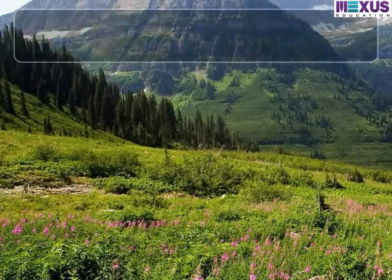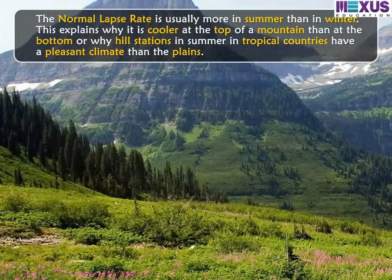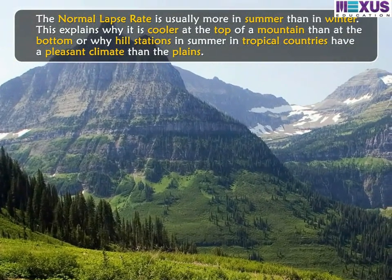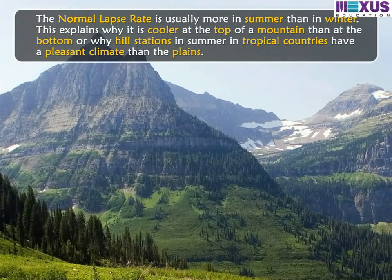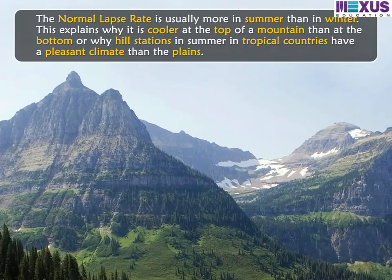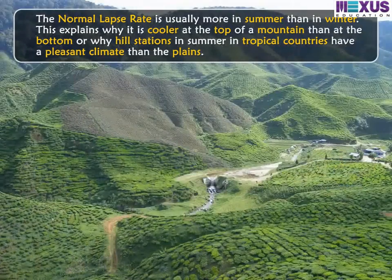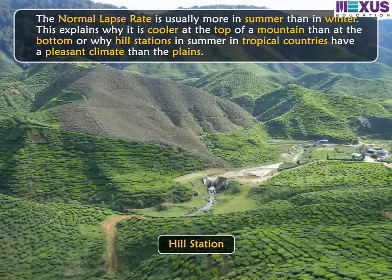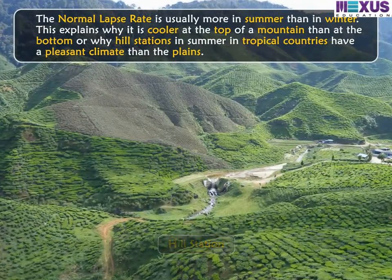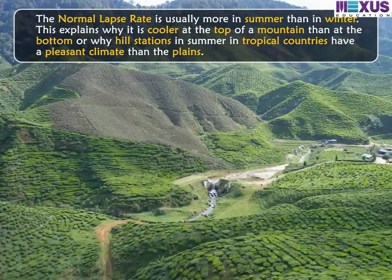The normal lapse rate is usually more in summer than in winter. This explains why it is cooler at the top of a mountain than at the bottom, and why hill stations in tropical countries have a more pleasant climate in summer than the plains.